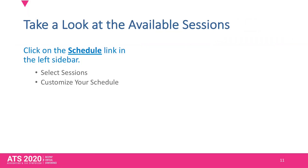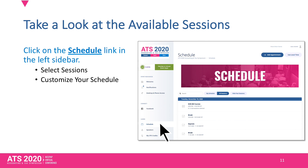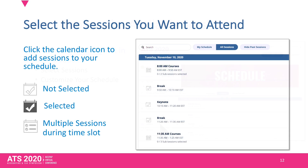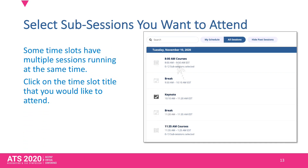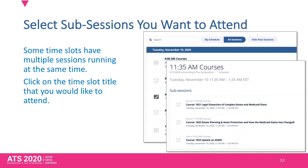Now you can plan your agenda. Start by clicking on Schedule, then check off the sections you want to attend. For time slots where multiple sessions are available, first click the calendar icon and then select the subsection you want to attend.